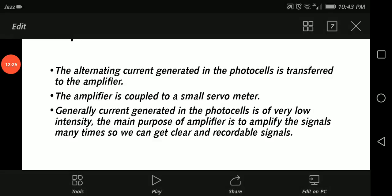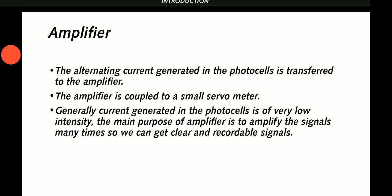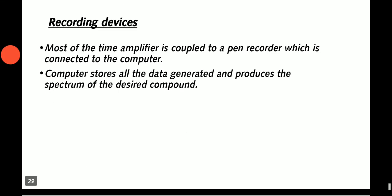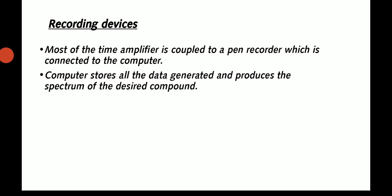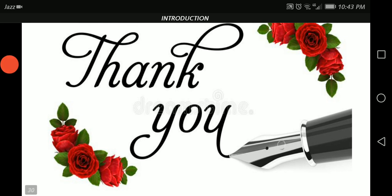Amplifier. The current generated in the photocells is transferred to the amplifier. The amplifier is coupled to a small servomotor. Generally, current generated in photocells is very small, so signals are amplified many times so we can get clear and recordable signals.